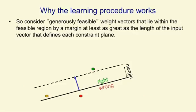What we're going to do is define a generously feasible weight vector. That's a weight vector that not only gets every training case right, but it gets it right by at least a certain margin, where the margin is as big as the input vector for that training case. So we take the cone of feasible solutions, and inside that we have another cone of generously feasible solutions, which get everything right by at least the size of the input vector. Now our proof will work.